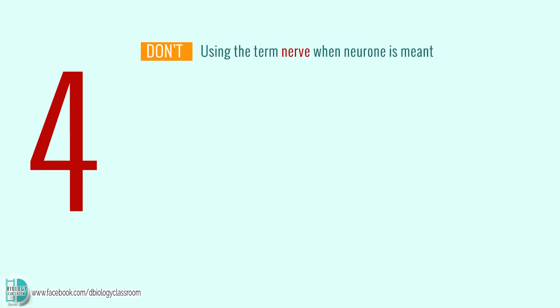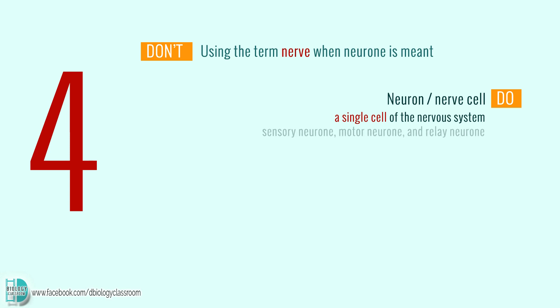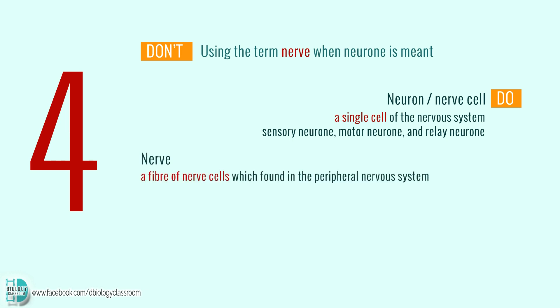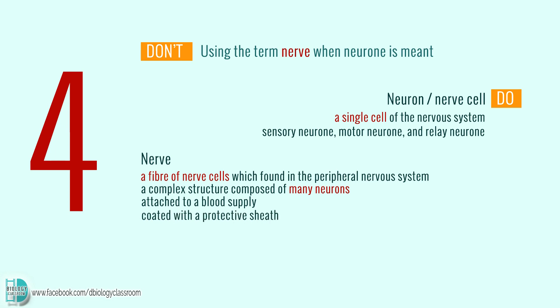Number 4: Using the term nerves when neuron is meant. A neuron or nerve cell is a single cell of the nervous system. The three types of neurons are sensory neuron, motor neuron, and relay neuron. A nerve, on the other hand, is a fiber of nerve cells found in the peripheral nervous system. It is a complex structure composed of many neurons attached to a blood supply and coated with a protective sheet.